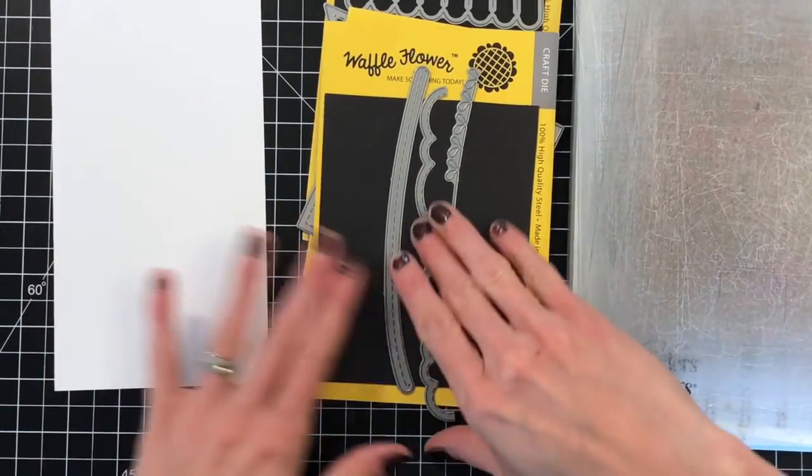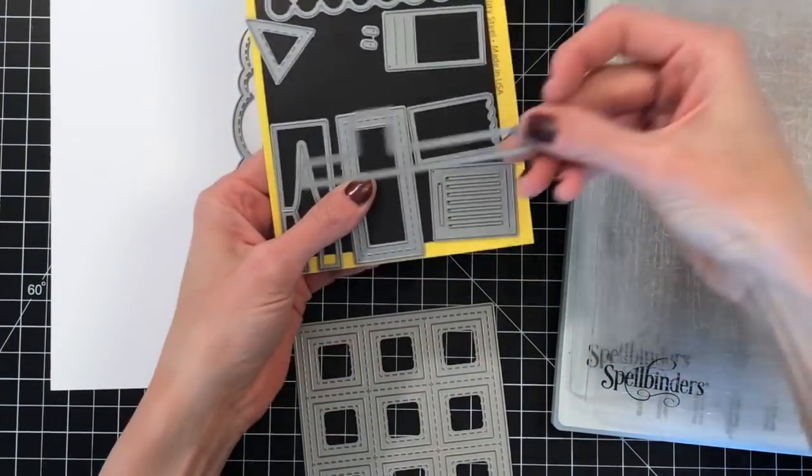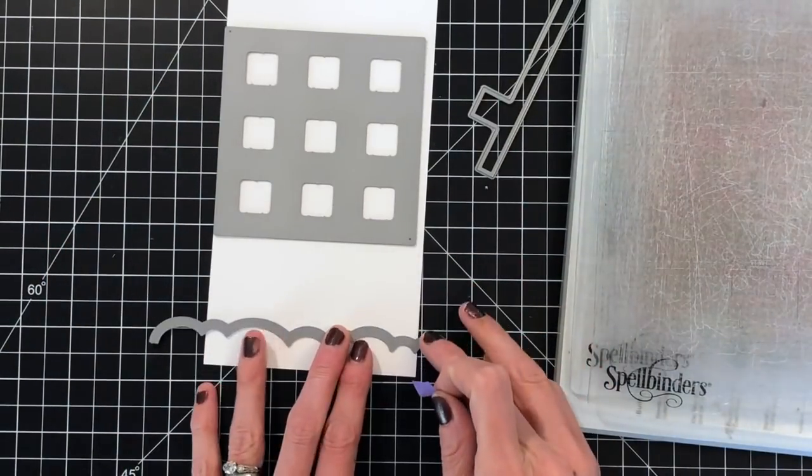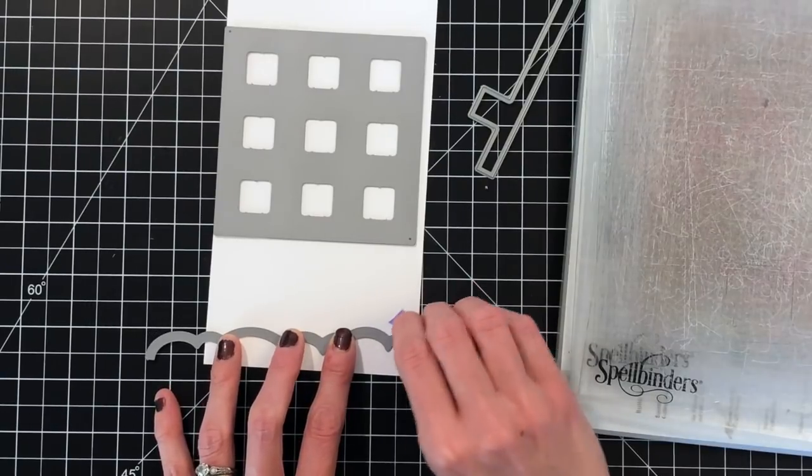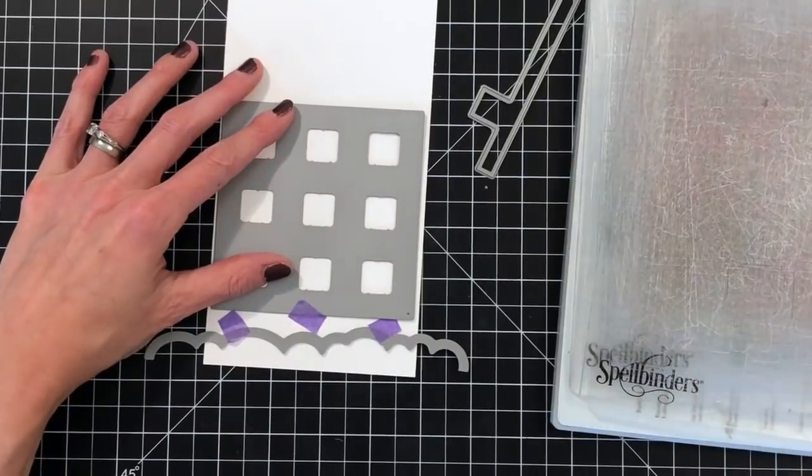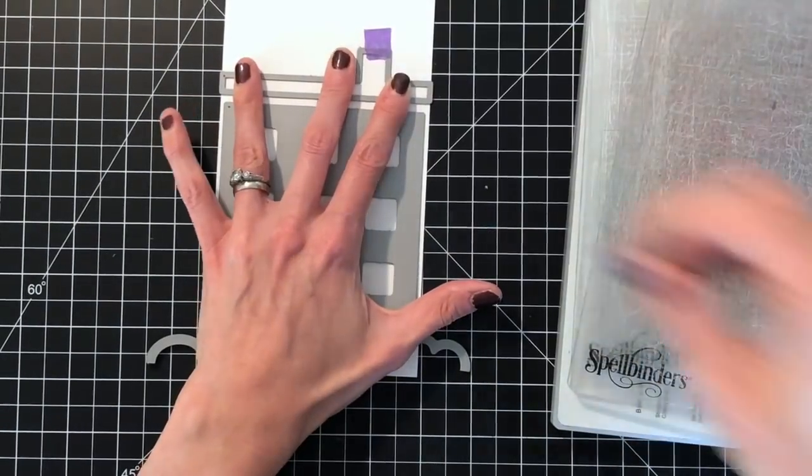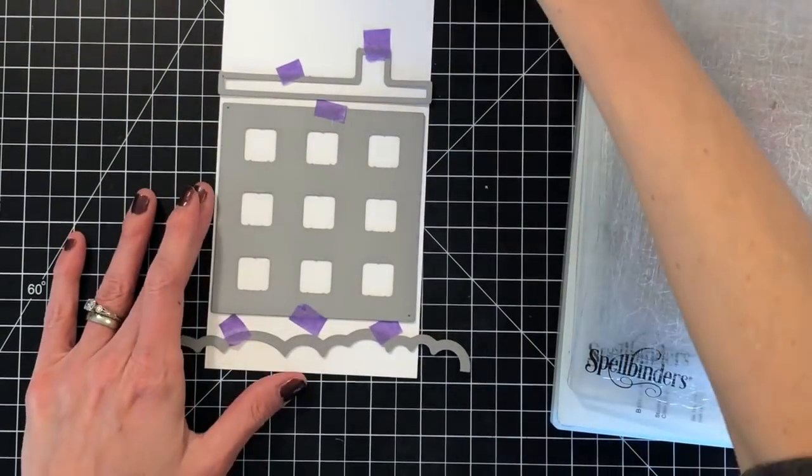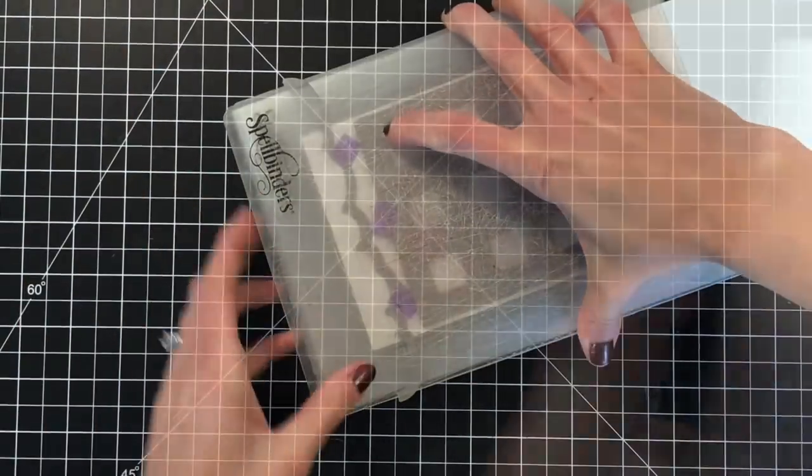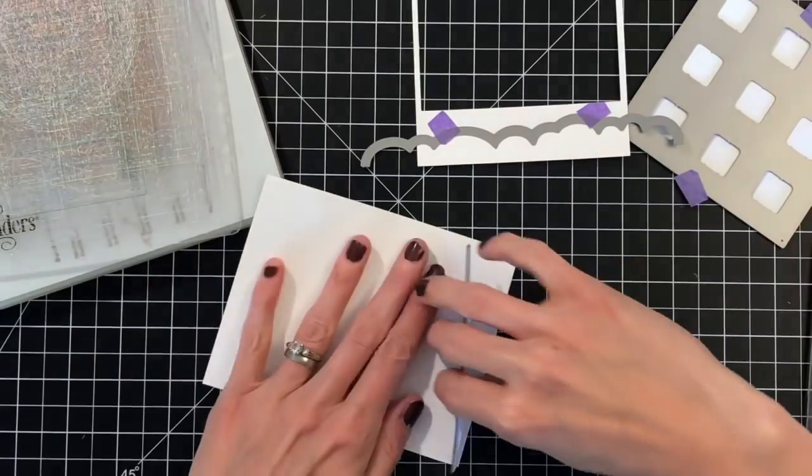So first up, I'm going to pull that cloud-like or scalloped die from the Scenery Die Set, pull that off using the Nine Grid, and then this kind of roof with the chimney from the Apartment Builder. I'm just going to cut these dies out from some 110 pound white cardstock. Hold them in place here on my cardstock with some purple tape, and then I will run them through my die cutting machine. I'm cutting basically a roof, my apartment, and some grass or tree tops with that scalloped die from the Scenery Die Set.